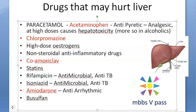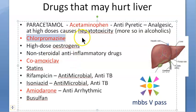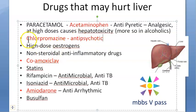Chlorpromazine — where would you give this? It is for schizophrenia and similar conditions. It is a first-generation antipsychotic drug.